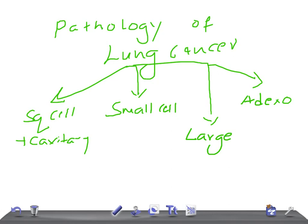Squamous cell carcinoma usually metastasizes by direct extension into hilar nodes and the mediastinum. A very important USMLE point: look for raised calcium — hypercalcemia — which is due to a parathyroid hormone-related substance (PTHrP). So if there is cavitation, the cancer is centrally located, and calcium is raised, think squamous cell carcinoma.